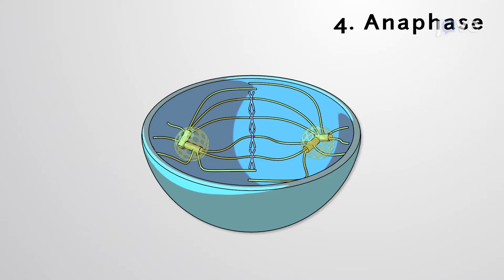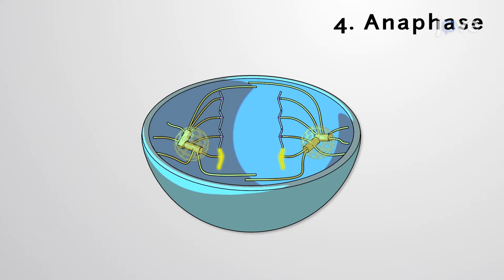With anaphase, kinetochore-affixed microtubules shorten, and sister chromatids, now individually referred to as chromosomes, are dragged apart. These and other microtubule dynamics also elongate the cell.